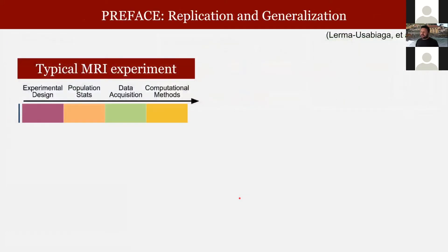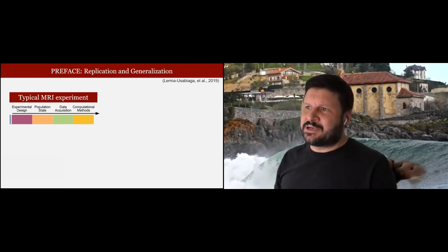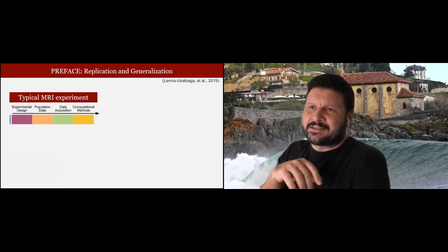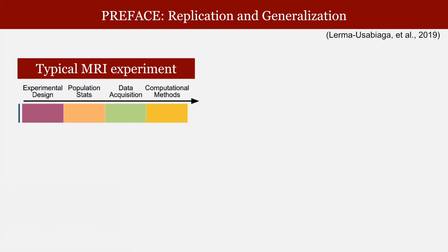I prepared a small preface to this talk because replication and generalization mean different things to everybody. We will call this computational reproducibility, but I would like to talk about general scientific replication, and I'd be really happy to discuss all of these terms in the Q&A. We published last year and today's talk is not going to be about that, but validation is part of the whole thing.